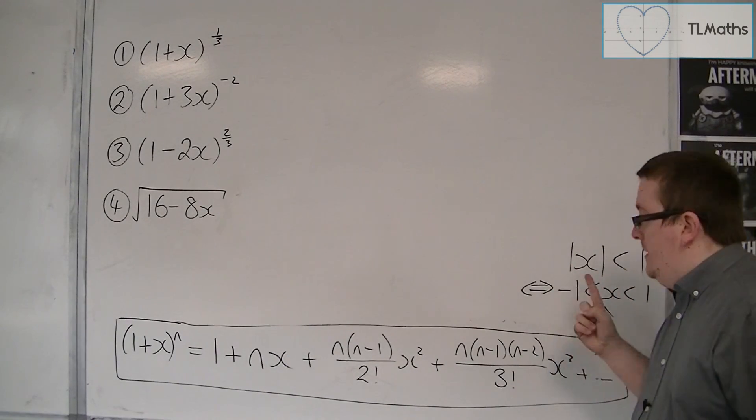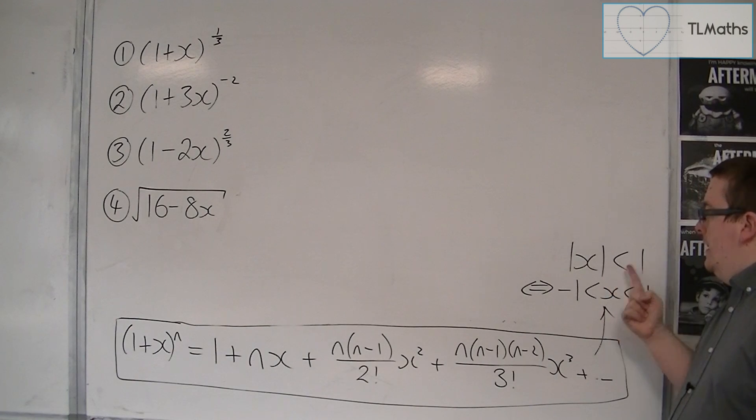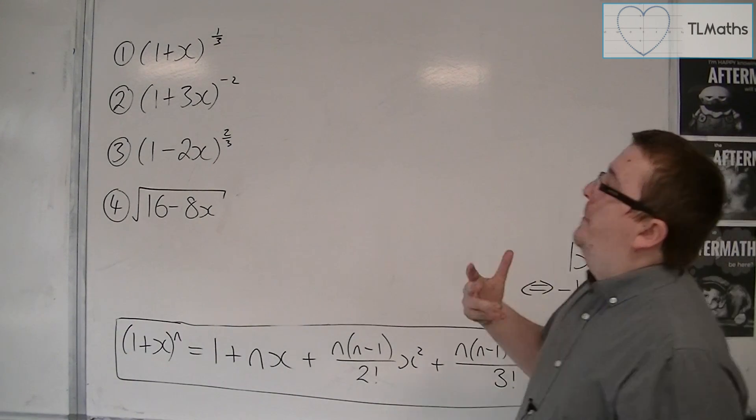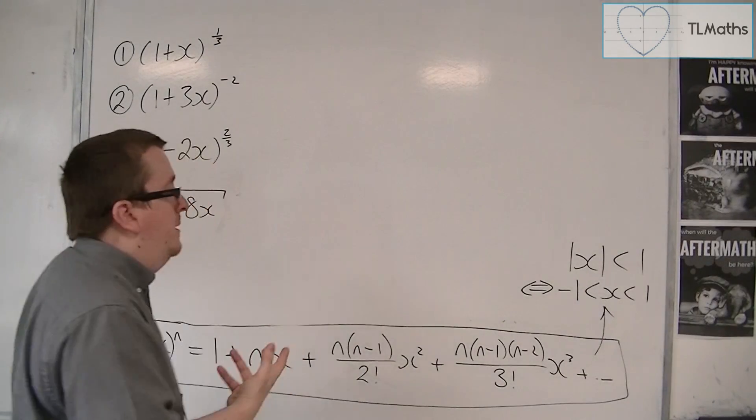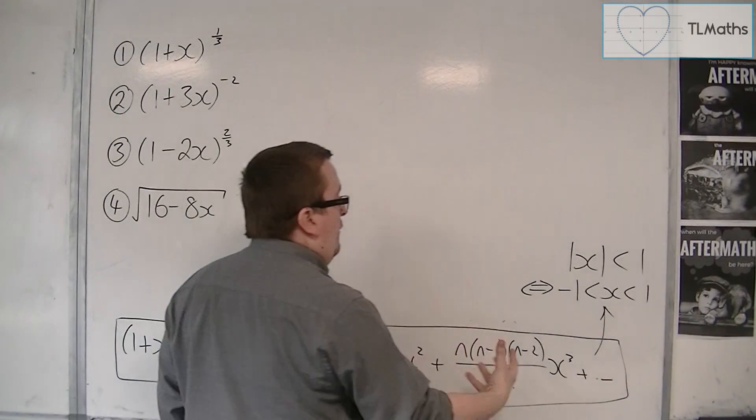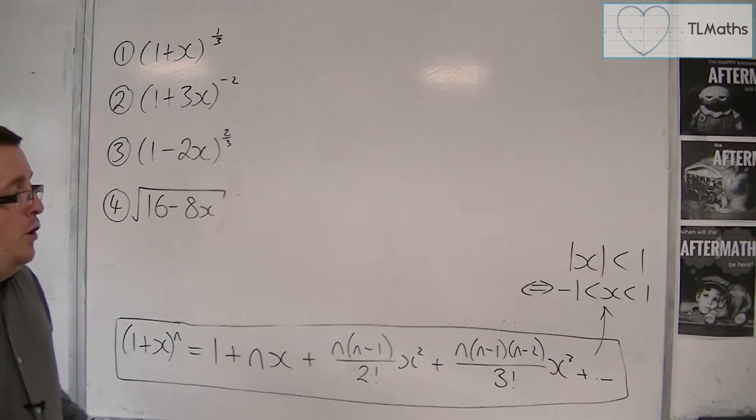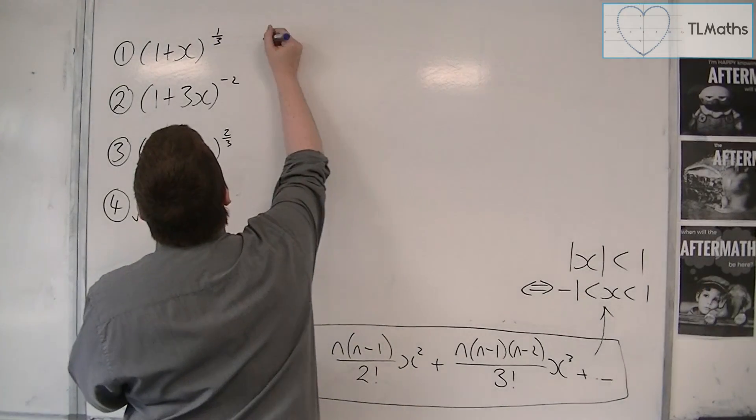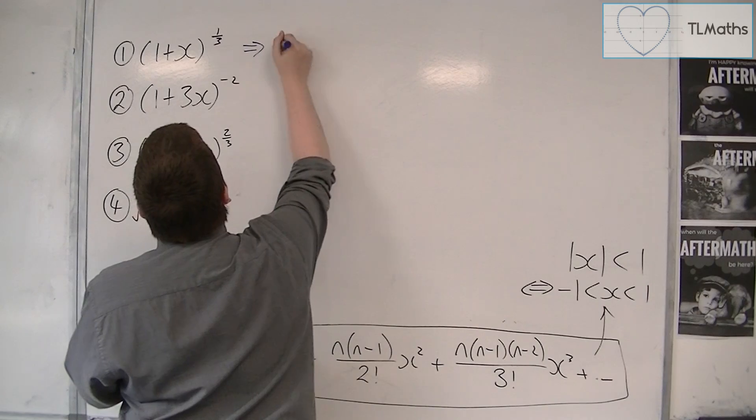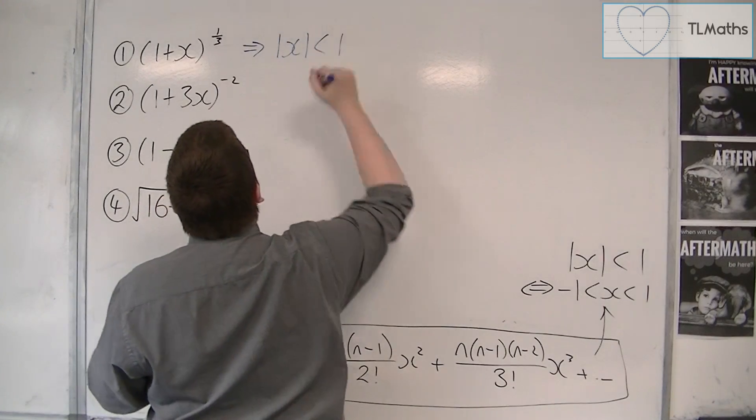n is nowhere here. And so that means that 1 plus x to the 1 third is governed just by that. And so mod x must be less than 1. There is no change.